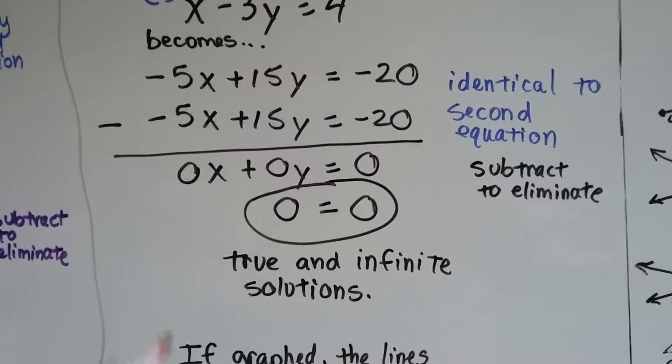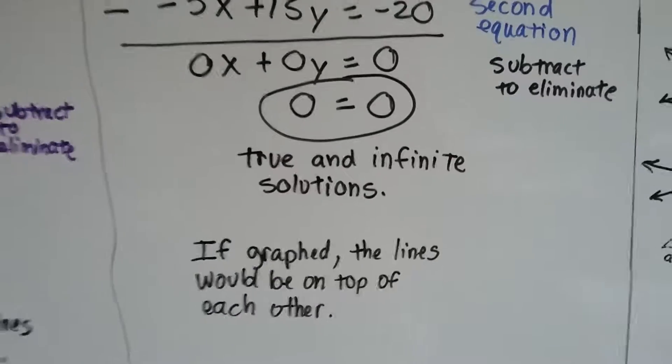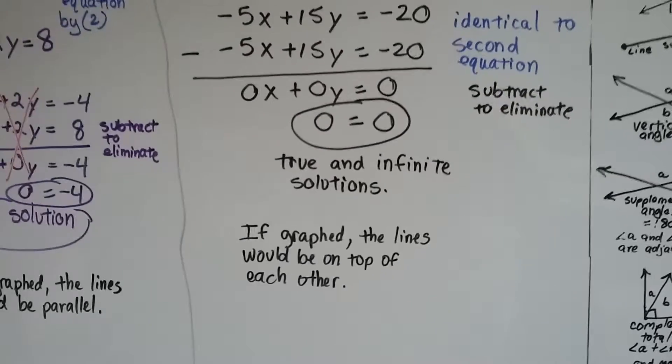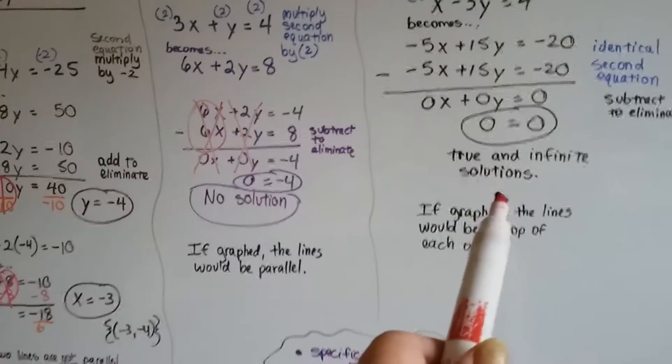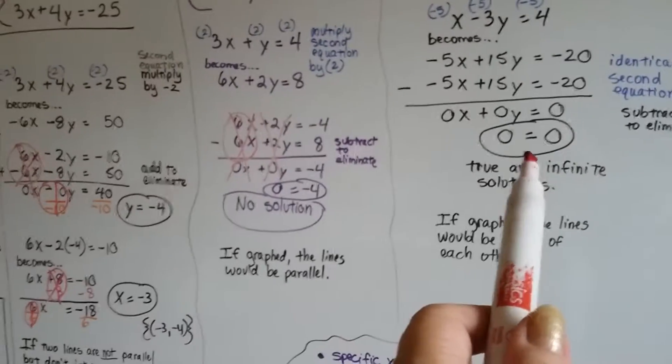That means 0 = 0. That's true, and there's an infinite number of solutions. If we graphed this, the lines would be on top of each other.